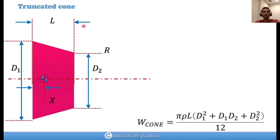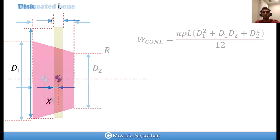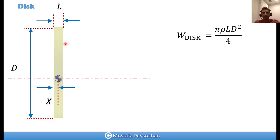For a truncated cone with a circular shape, we have diameters d1 and d2 and thickness L. The weight of the cone follows the same scenario — it's always density times volume. The volume of a truncated cone is π L (d1² + d1·d2 + d2²) / 12. For a disc, which is a very simple case with diameter d, thickness L, and density ρ, the weight is π ρ L d² / 4, which is the area times the thickness.